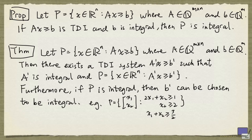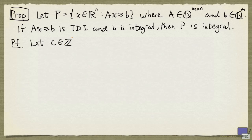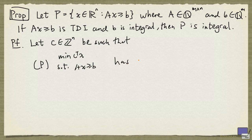We'll now look at a proof of the proposition. So take an n-tuple c with integer entries such that the problem minimizing c transpose x subject to Ax greater than or equal to b has an optimal solution. Now the dual problem of P is the following.